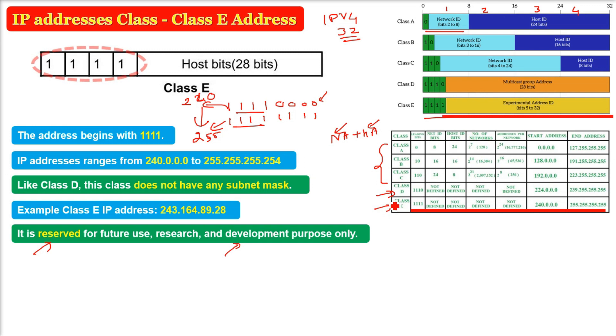That is why Class E, like Class D, is not having any subnet mask. The range is from 240 to 255, the first octet. This is an example of Class E. Don't worry about 164.89.28. If it is starting from 243, it is quite clear that it is between 240 and 255. This is a Class E address.